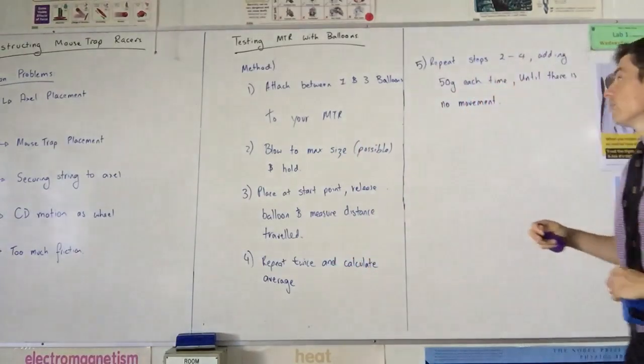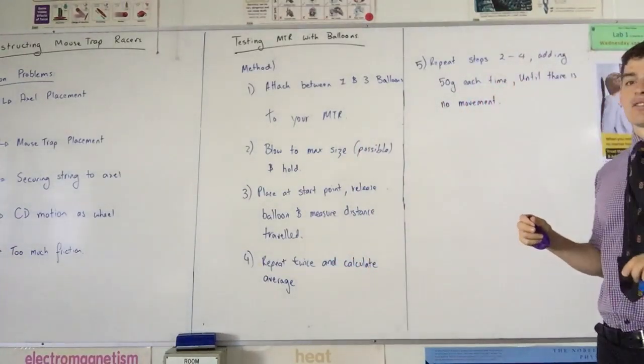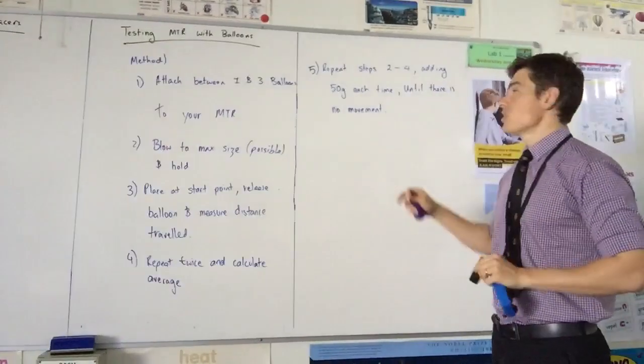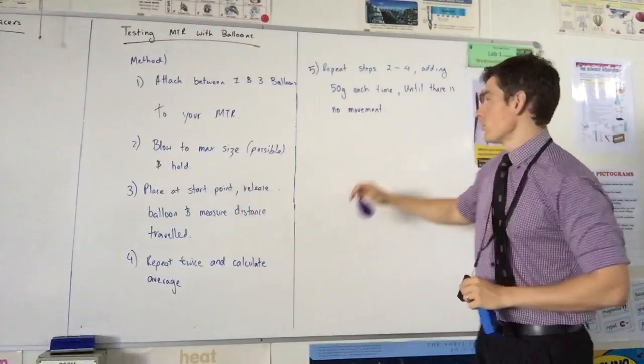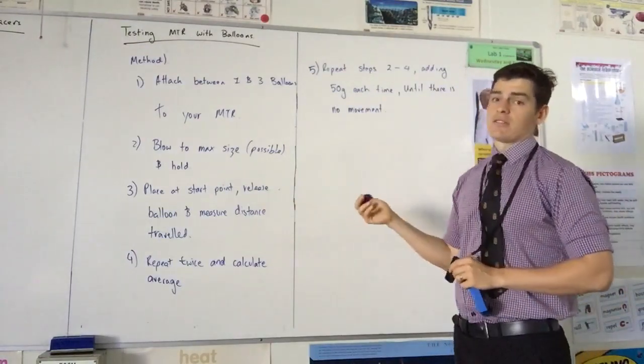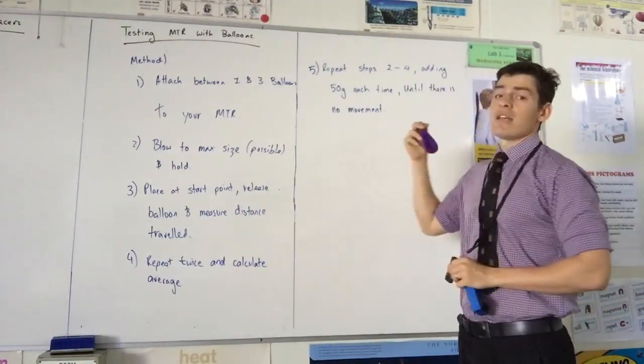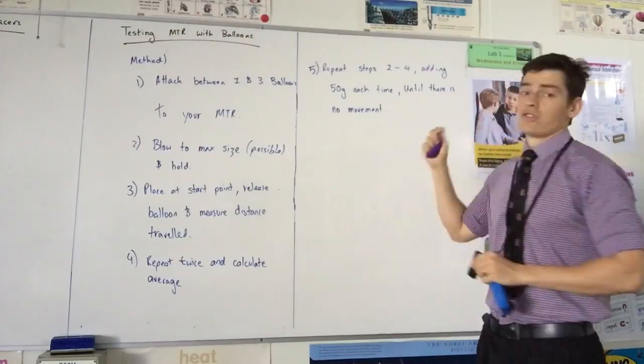Step five over here. And this is the variable we're changing. We're going to repeat steps two to four. Blow to max size, place it at a start point, repeat twice. We're going to repeat those steps, adding 50 grams each time until there is no movement.